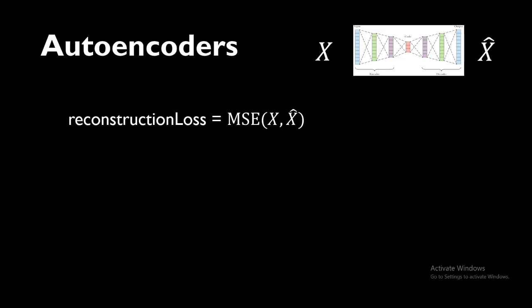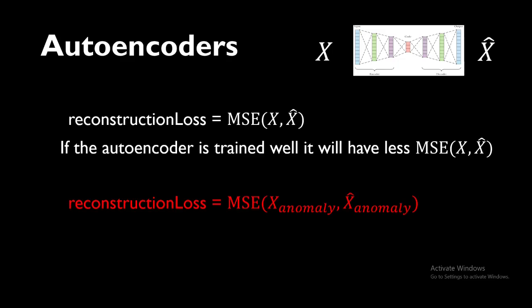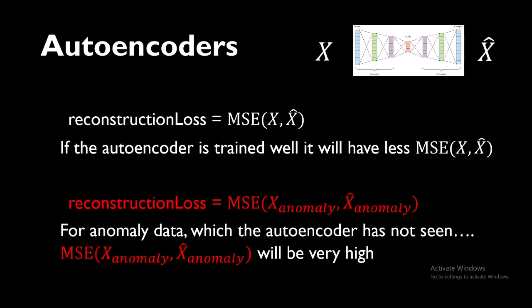The reconstruction loss is just the mean squared error between the input and the output given by the neural network. If the autoencoder is properly trained, this MSE will be very small. But when the input is anomalous — not belonging to our training data — the network should not reconstruct it properly, so the reconstruction error will be very high. We can detect this by applying a threshold: if the reconstruction error of a new sample goes beyond that threshold, we classify it as an anomaly.